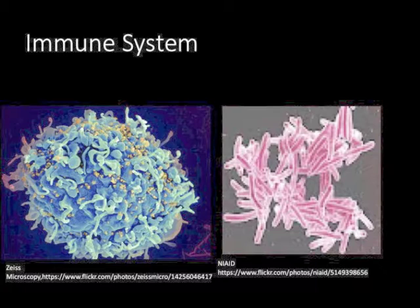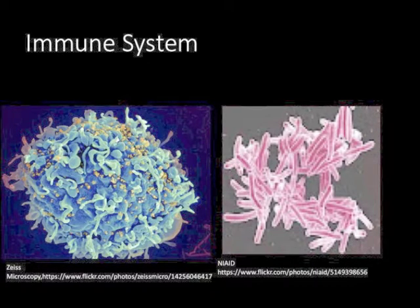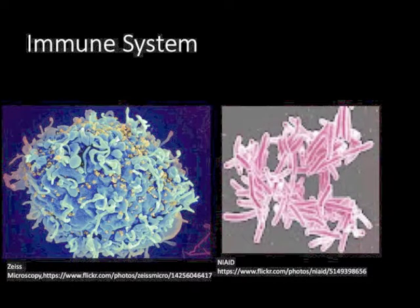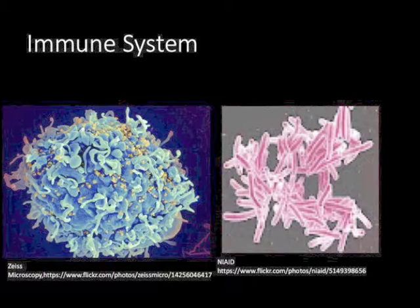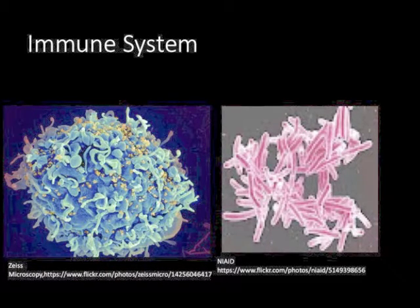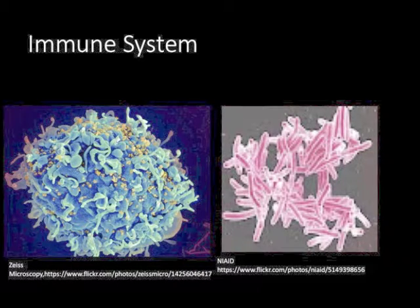The purpose of our immune system is to protect us from harmful things. Here are a couple pictures of some things that can harm us. The first one is the virus that causes AIDS. The second is the bacteria that causes tuberculosis. If we combine this with the parasite that causes malaria, we have the three big killers worldwide.